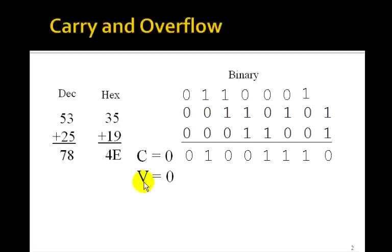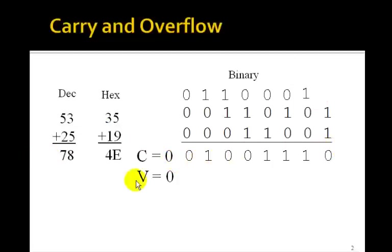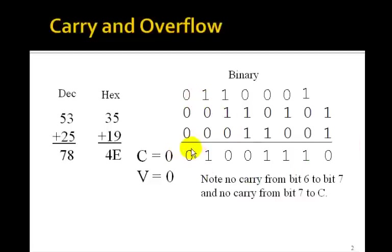The overflow bit is also 0 because 78 is inside the range minus 128 to plus 127. Thought of as signed numbers, this is positive 53 plus positive 25, and the answer is positive 78 decimal, which is correct. Note that we had no carry from bit 6 to bit 7, and no carry from bit 7 into the carry bit. Any time that happens, the overflow bit will always be set to 0.